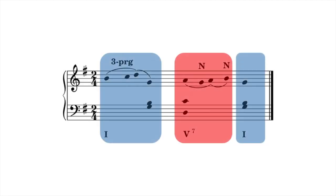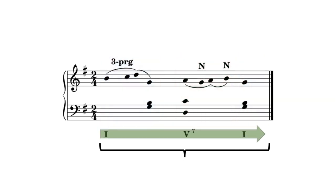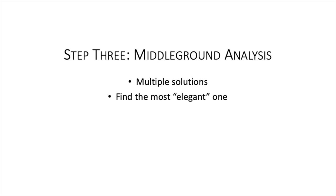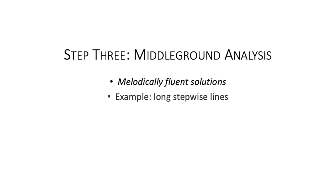In step two we analysed chord by chord. Next, we're going to link up these foreground elaborations into larger spans and try to identify larger harmonic patterns such as 1-5-1. Note that here, and to a certain extent in all the steps, there's never one correct answer as such — there are often multiple ways of analysing the same passage. However, some solutions will be more elegant than others, and the more elegant a solution is, the more meaningful it will be. As we go deeper into the layers of analysis, it will be more and more important to try to find melodically fluent solutions, such as stepwise connections. To try and understand this, we'll first give a middle ground analysis that, while not incorrect, is very unsatisfactory.